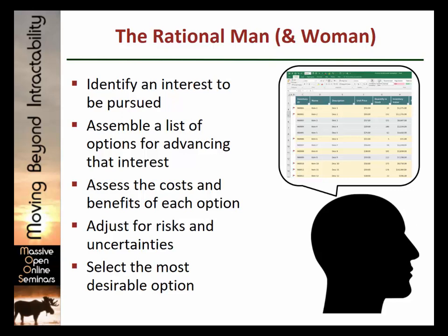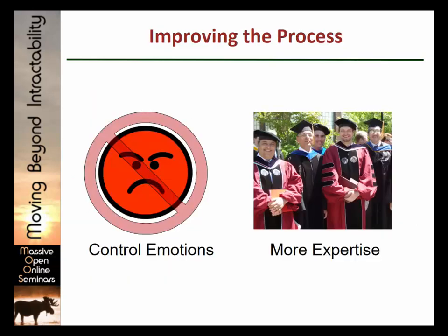Then we assess the costs and benefits of each option. We might make some adjustments for risk and uncertainty — this option would be really great, but I don't think I can get it. And then finally, you go ahead and select the most desirable option. We also do a lot of things to try to improve the process. A lot of what you'll hear in terms of improving decision-making is: you've got to get your emotions out of this, you've got to think rationally. And the more expertise you can get, the better.